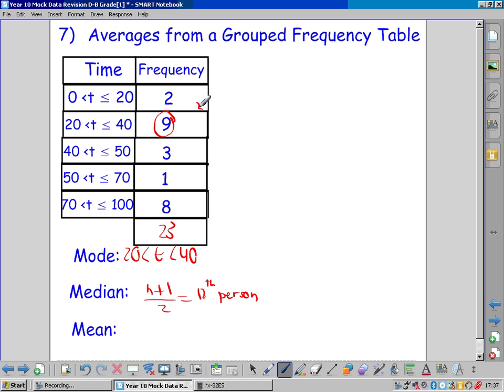Well they're the first 2 people. 2 plus 9 is 11. So these 2 rows have the first 11 people in it. 11 plus 3 is 14. So these 3 rows have the first 14 people in it.